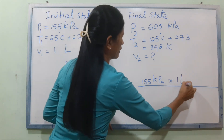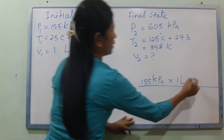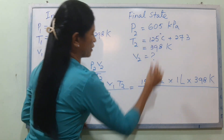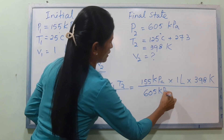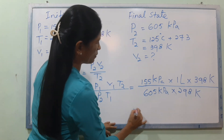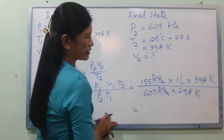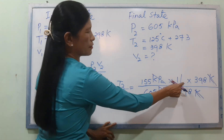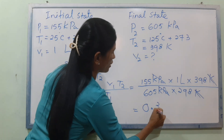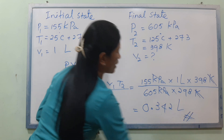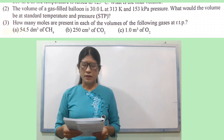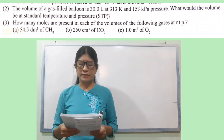V1 is 1 liter. T2 is 398 Kelvin. P2 is 605 kPa. T1 is 298 Kelvin. Using the combined gas law: P1V1/T1 = P2V2/T2. The result is V2 equals 0.342 liters.